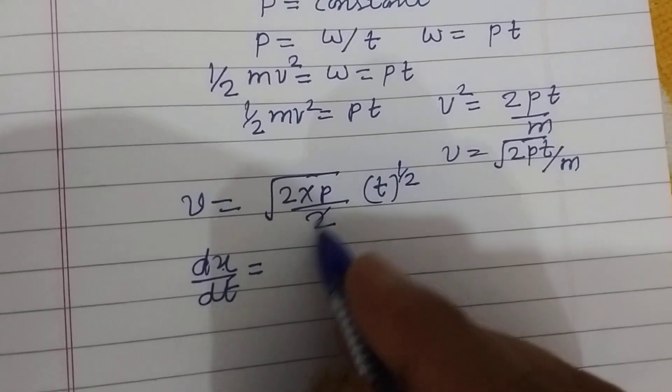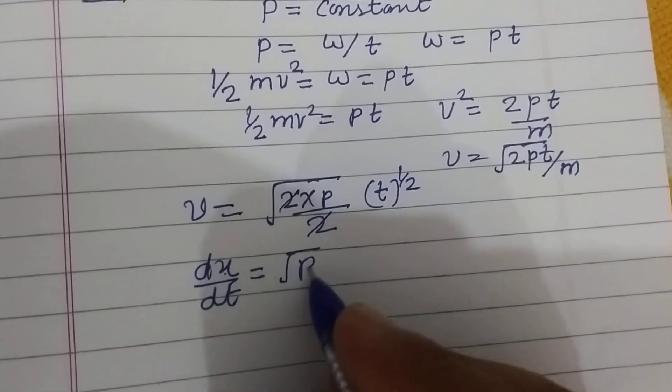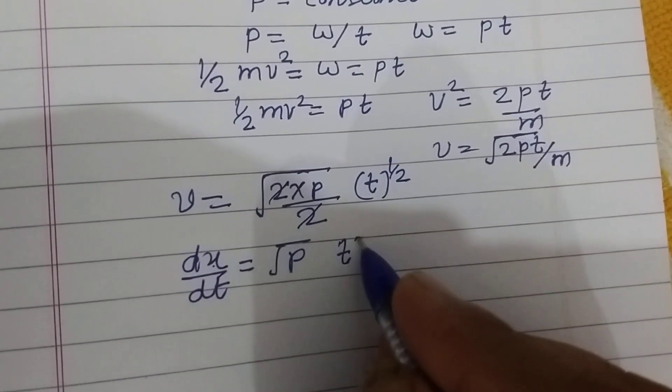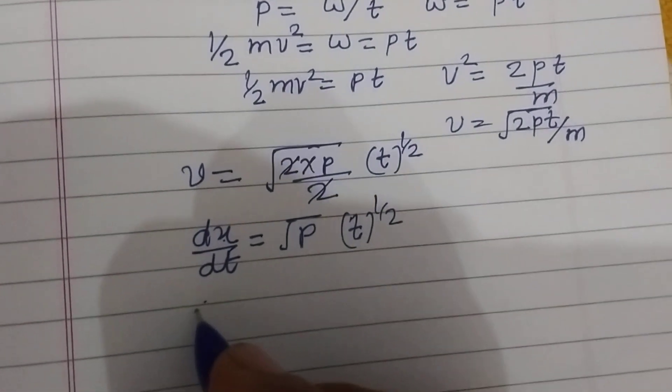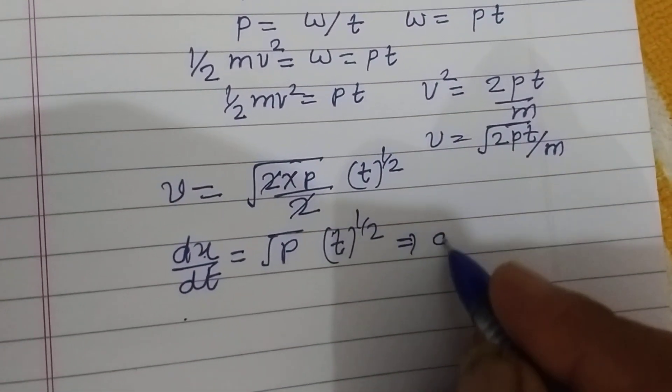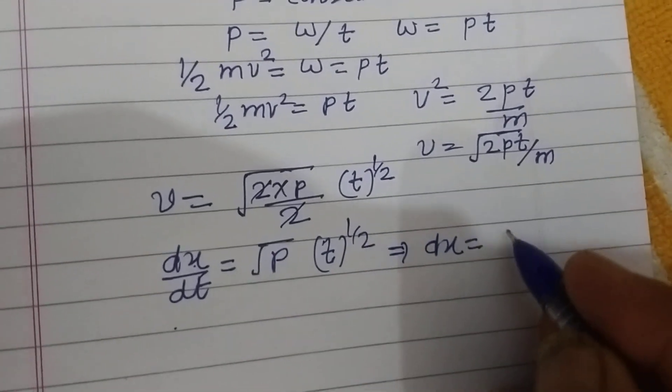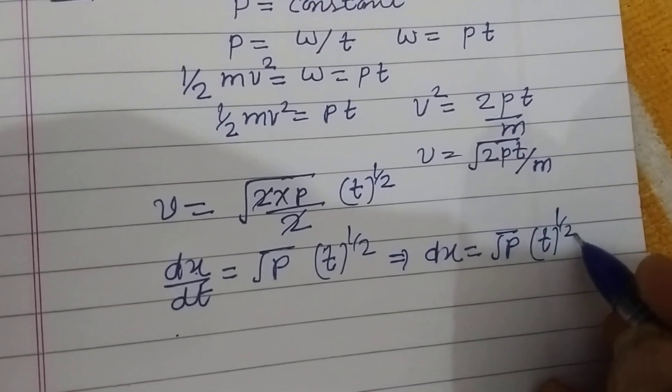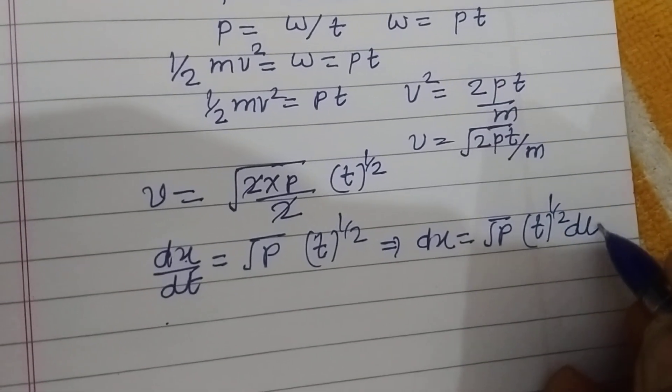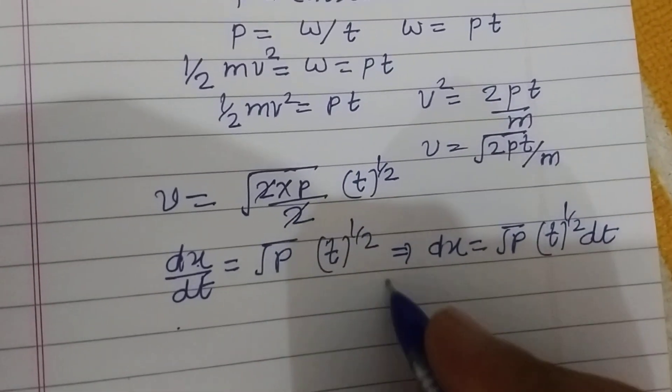dx upon dt equals square root P times T to the power 1/2. Therefore, dx equals square root of P, T to the power 1/2 dt. Now integrating both sides,